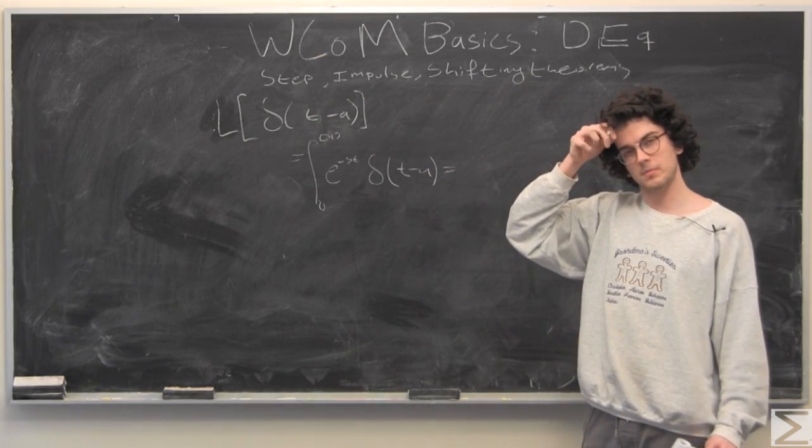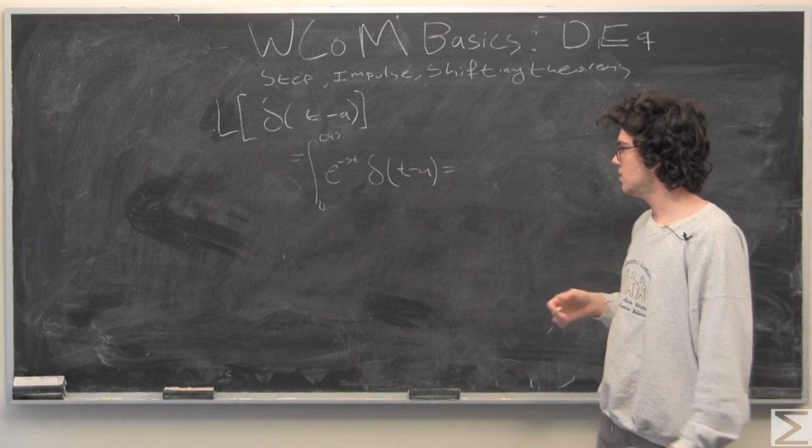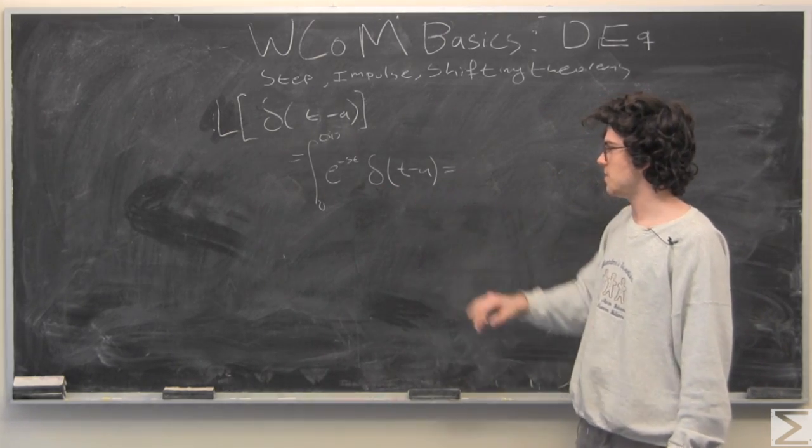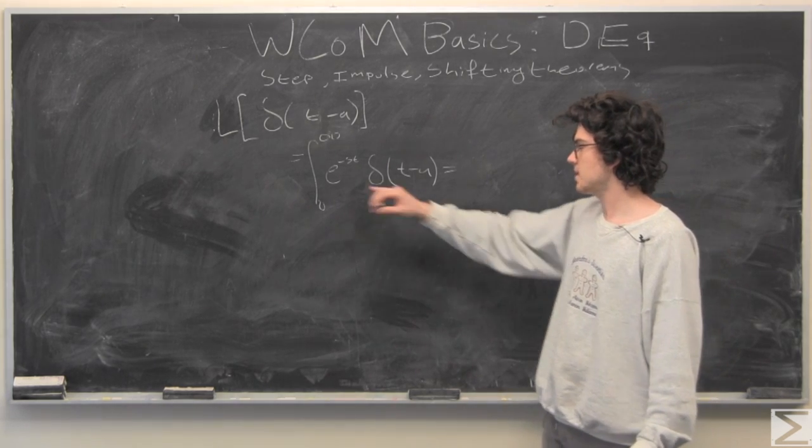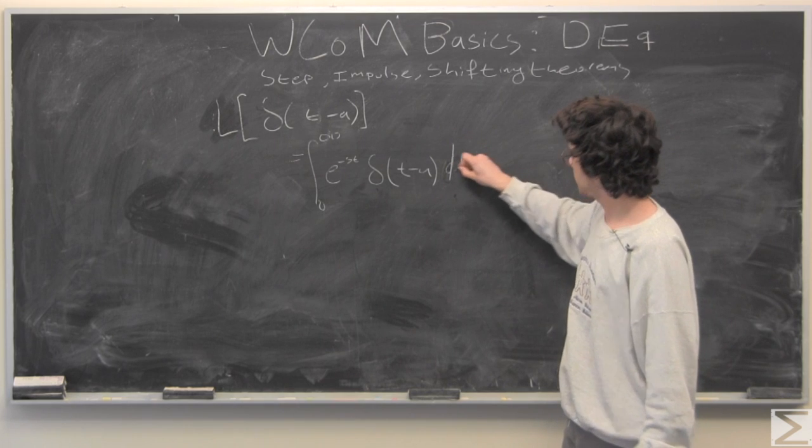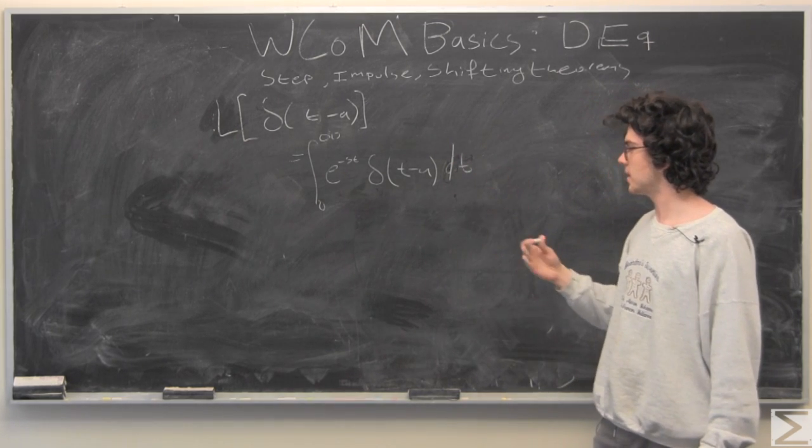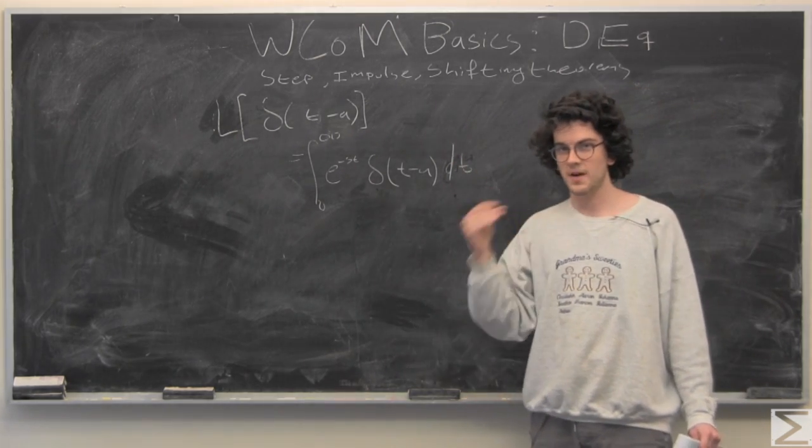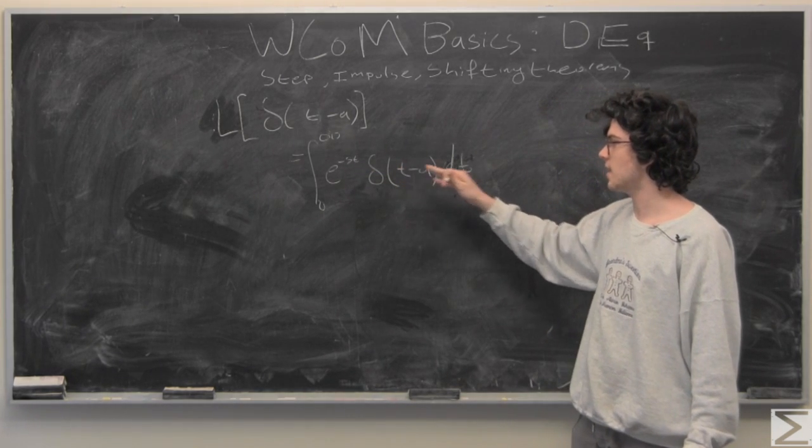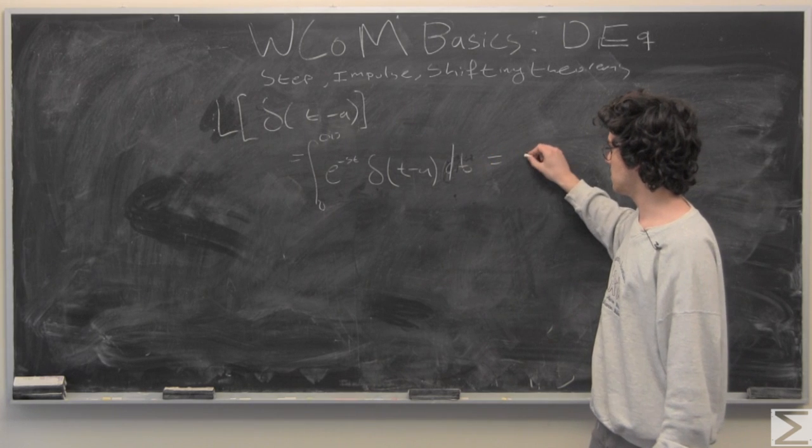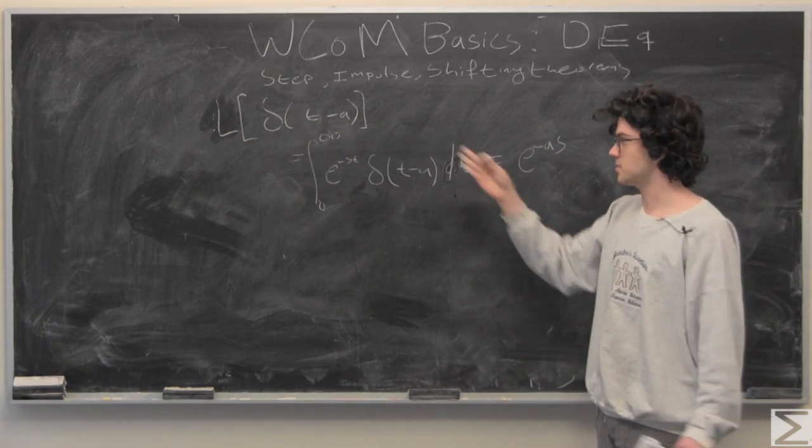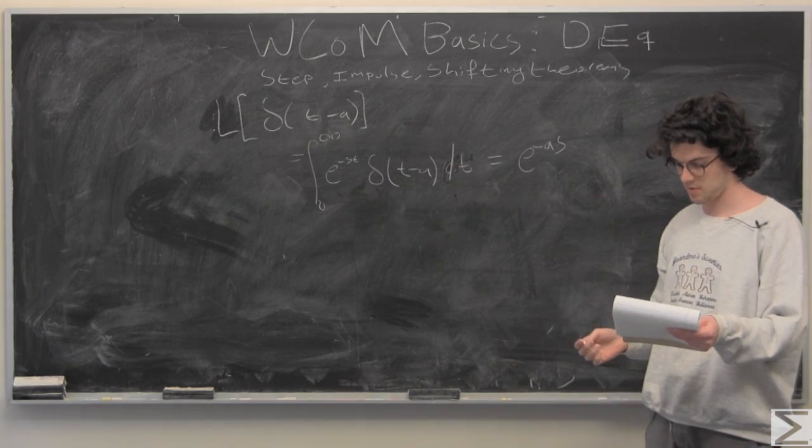This one's a little bit more intuitive and straightforward. If we have an impulse here at some time a, at e^(-st), of course with respect to t, the only value that really counts is e^(-as). So, that's the Laplace transform of the impulse function.